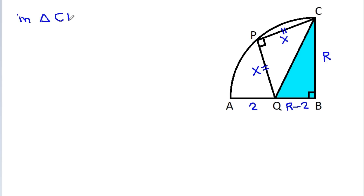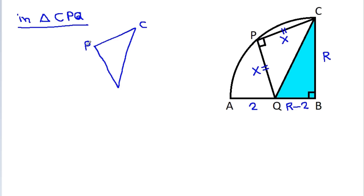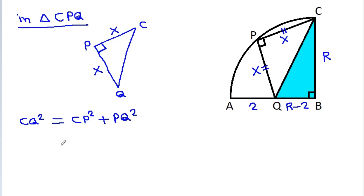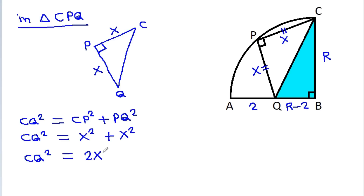CP is equal to PQ: CP is x, PQ is x, and this angle is 90 degrees. So CQ² will be equal to CP² plus PQ², and CQ² is equal to x² plus x². So CQ² will be equal to 2x², and CQ will be equal to √(2)·x.